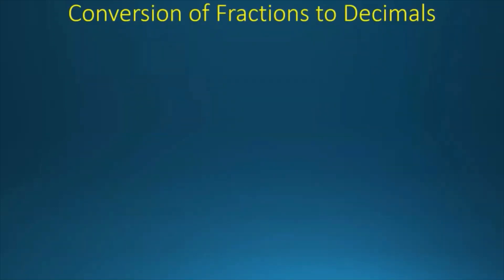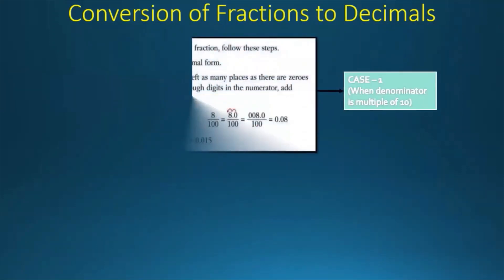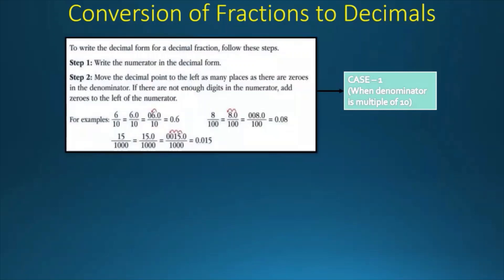Now let's do conversion of fractions into decimals. First we have Case 1, when the denominator is a multiple of 10. To write the decimal form of a decimal fraction, we have to follow these steps. Step 1: Write the numerator in the decimal form. Step 2: Move the decimal point to the left as many places as there are zeros in the denominator. If there are not enough digits in the numerator, add zeros to the left of the numerator.